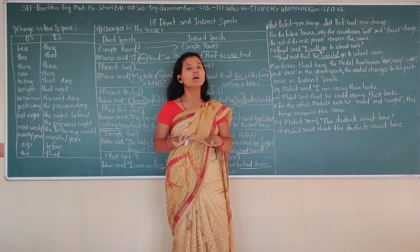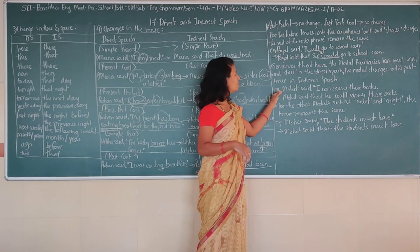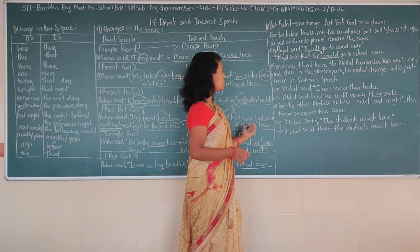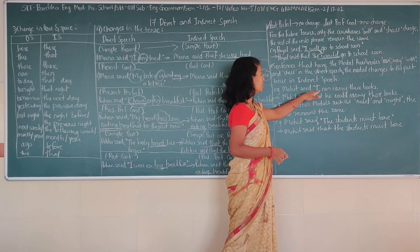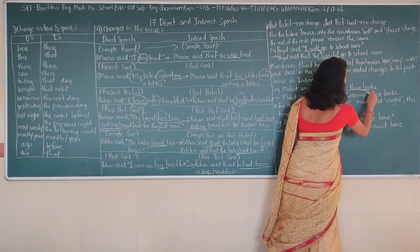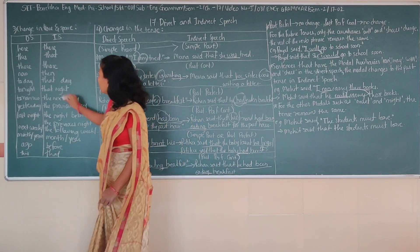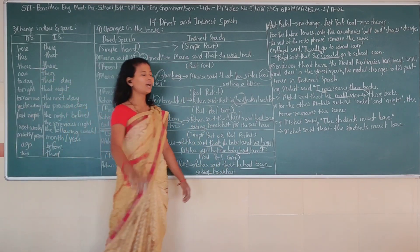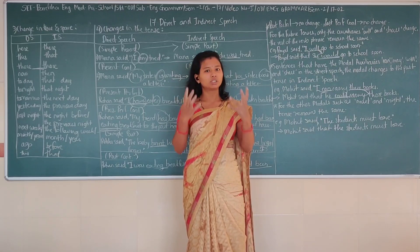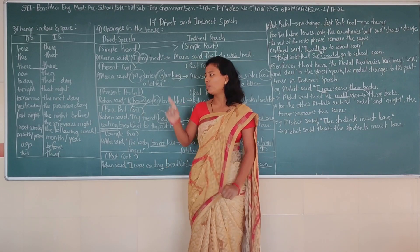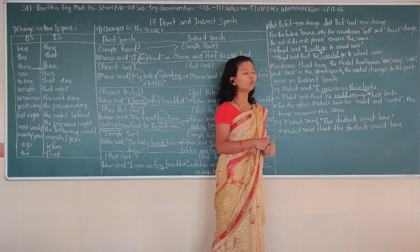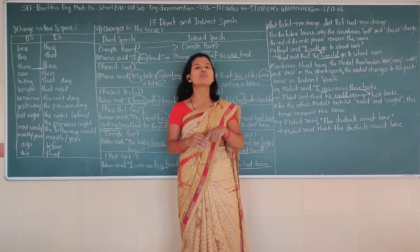The remaining sentence stays the same. For example: 'Mohit said I can carry these books.' In indirect speech: 'Mohit said that he could carry those books.' So 'can' becomes 'could', and 'these' becomes 'those'. You have to learn these rules by heart to set indirect speech in your mind.